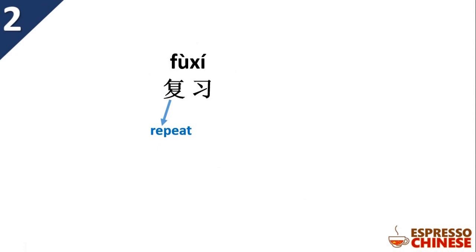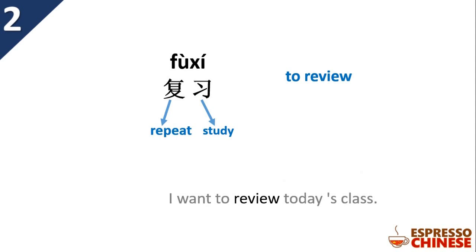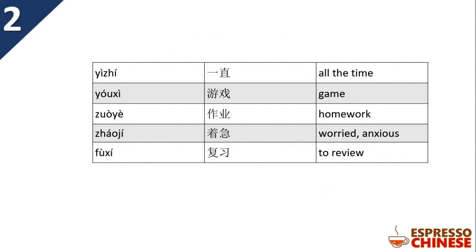复习 (fùxí). 复 means 'to repeat', 习 means 'to study'. Together, 复习 means 'to review'. Example: 我早就复习好了 — 'I reviewed long ago / I finished reviewing a long time ago.' 早就 emphasizes that something happened at a really early or long-ago time. How do you say 'I want to review today's lesson'? You say 我要复习今天的课.